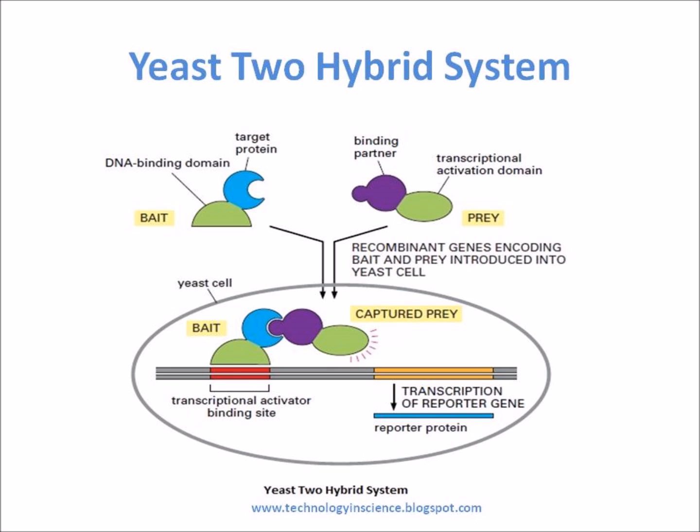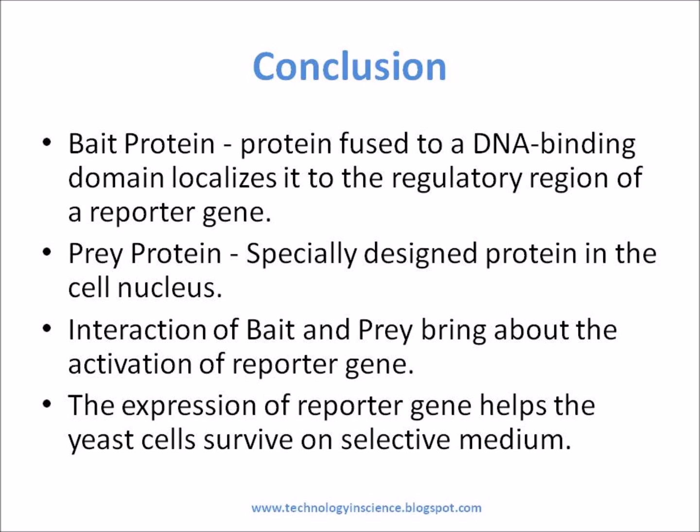A similar technique called the reverse-two-hybrid system can be used to detect mutations or chemical compounds that are able to disrupt specific protein interactions. In the reverse-two-hybrid system, the reporter gene is replaced with a gene that kills the cells when the bait and prey proteins interact. Eliminating a particular molecular interaction can reveal something about the role of the participating proteins in the cell.